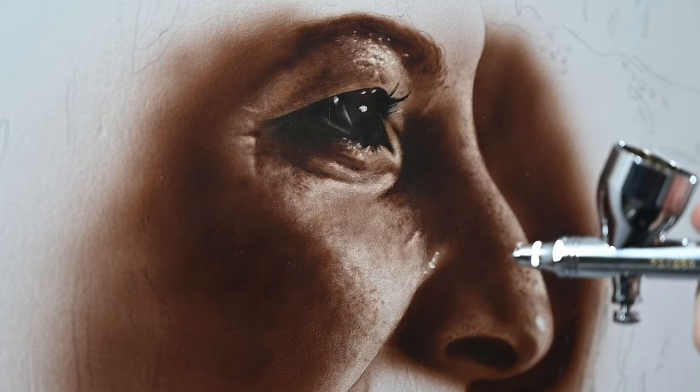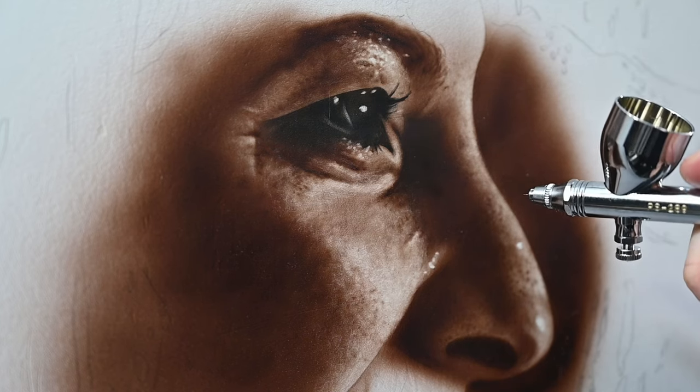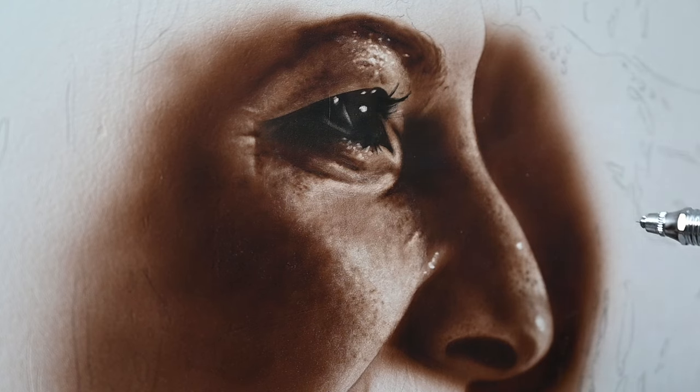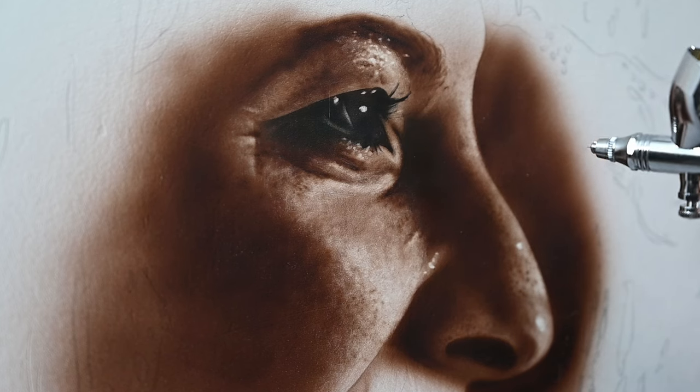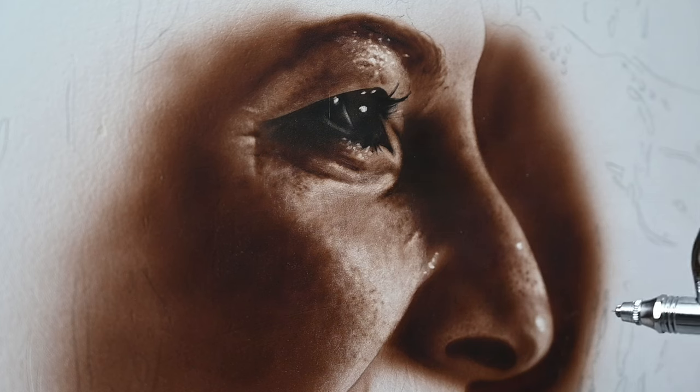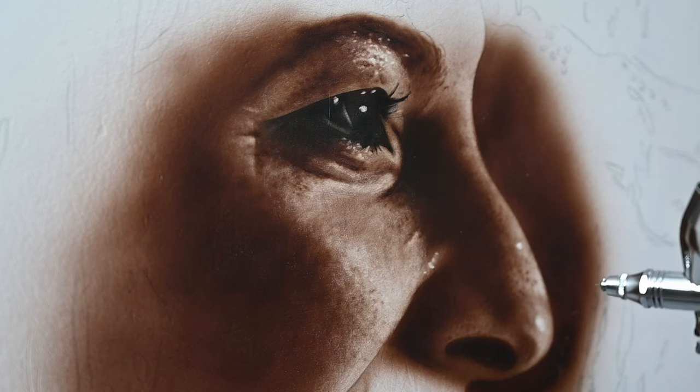Out of all the other airbrushes I own, I would say that this one feels similar to the Iwata Eclipse and the Paasche Talon. Those airbrushes both have slightly larger nozzle size, but the spray pattern is pretty similar. One other thing that I noticed is that the air valve assembly on this airbrush, which is at a slight angle backwards, felt a bit strange in this painting. The only reason for this is because every other airbrush I own has an air valve assembly, which comes down at a 90 degree angle, and it's just what I've gotten used to. So nothing uncomfortable here, just different.